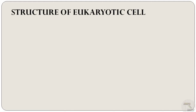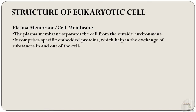Now let's discuss about the structure of eukaryotic cells. First is the plasma membrane, or the cell membrane. Every eukaryotic cell is surrounded by a plasma membrane, also known as the cell membrane. This plasma membrane is made up of a phospholipid bilayer with embedded proteins that separates the internal contents of the cell from its surrounding environment.